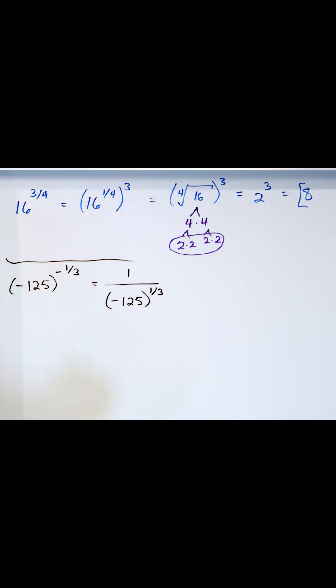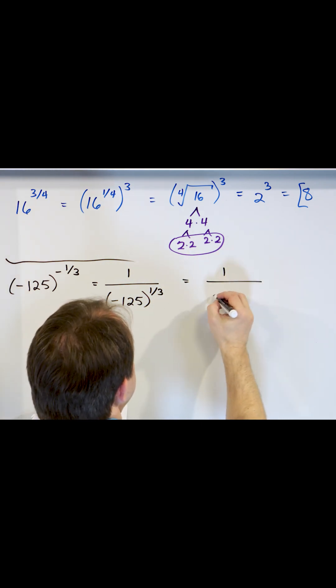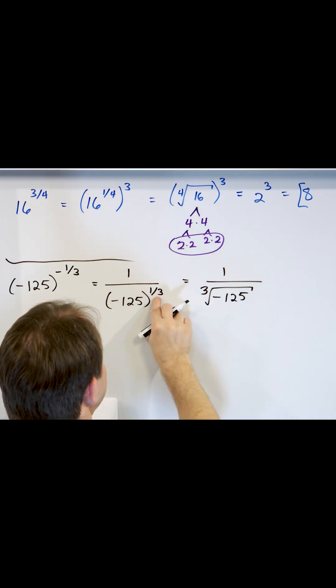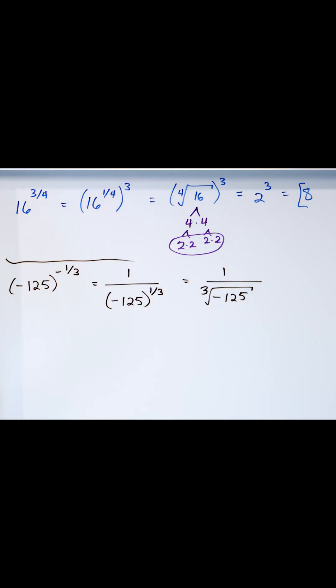And then we know that one-third power means negative 125 is a cube root. Cube root goes there because that's a one-third power.